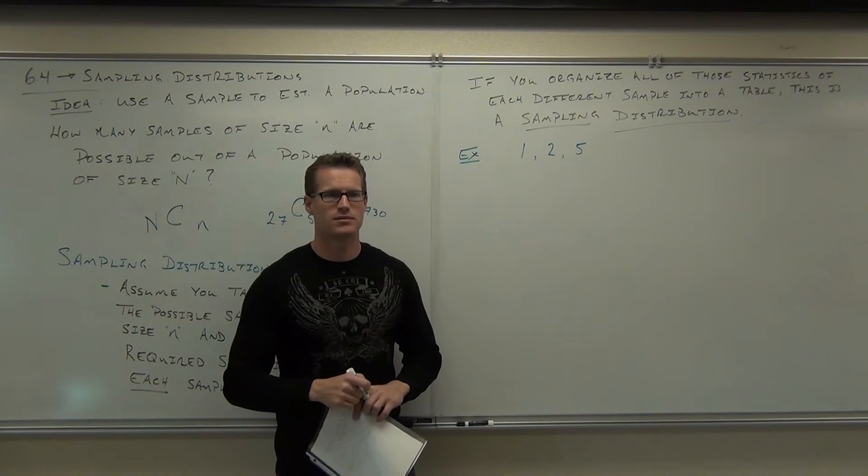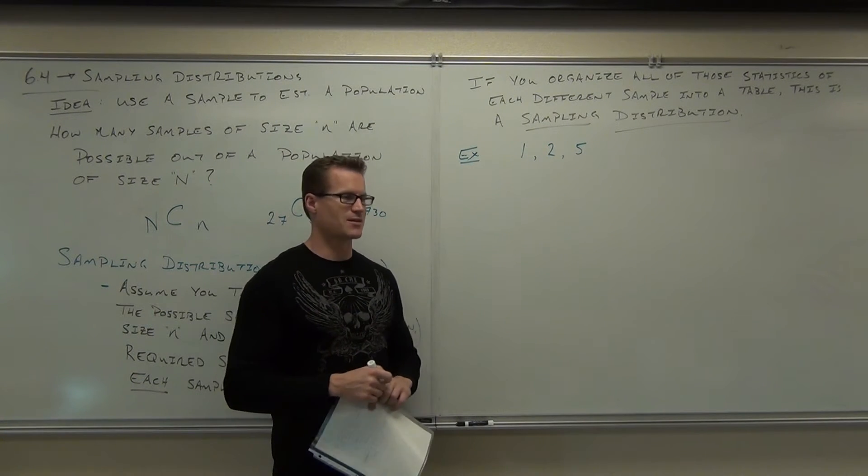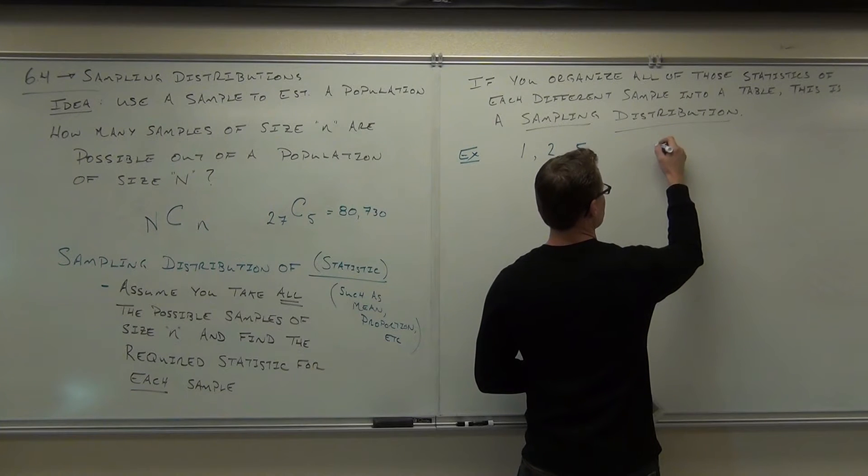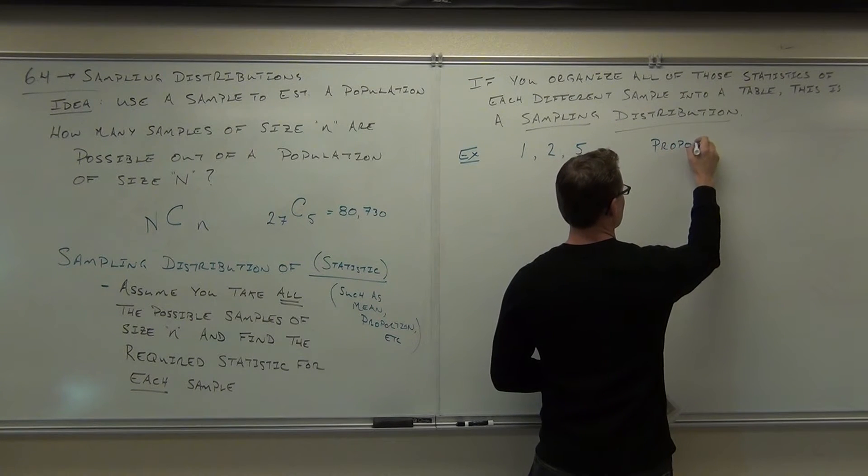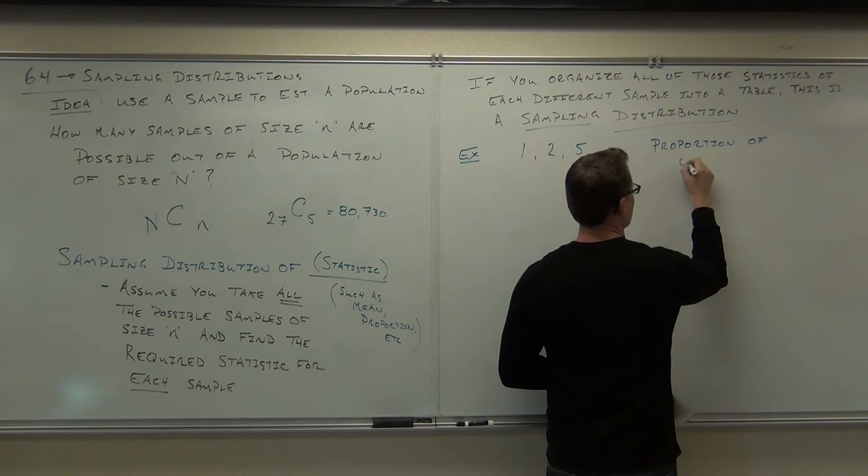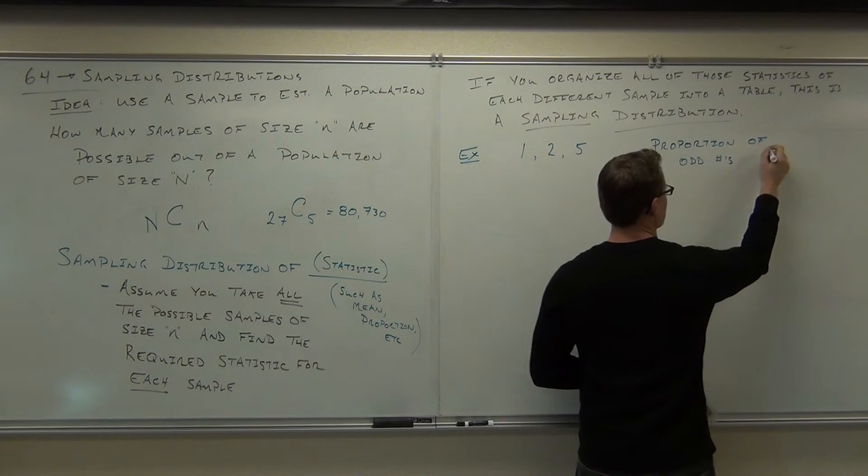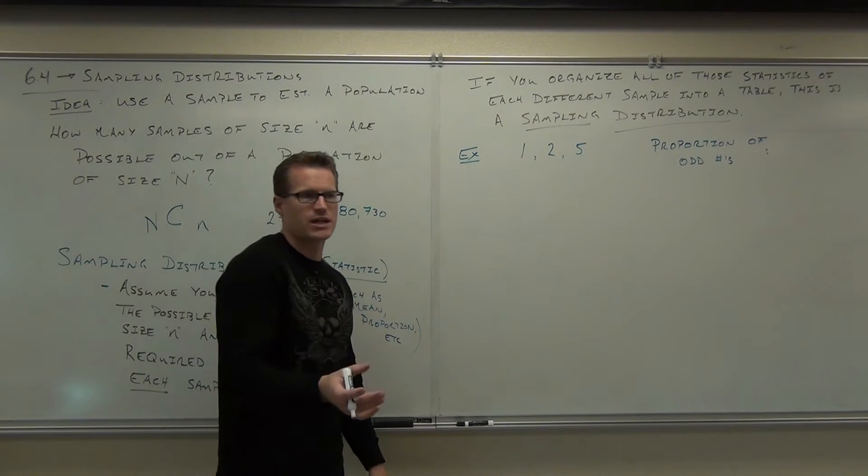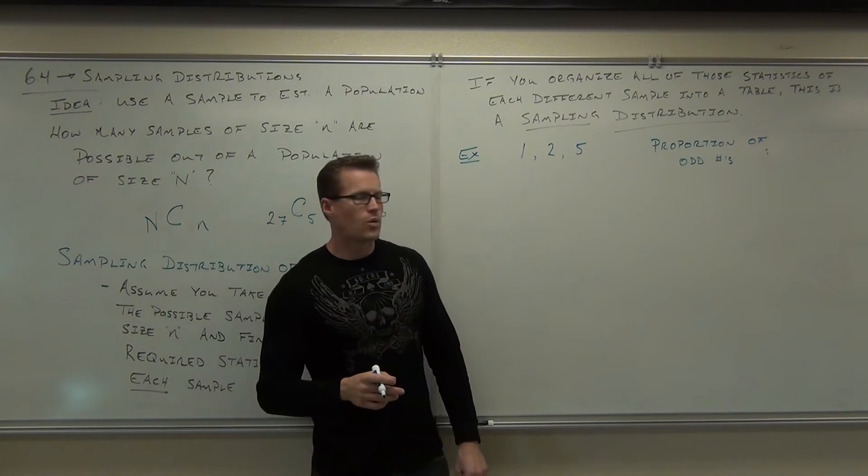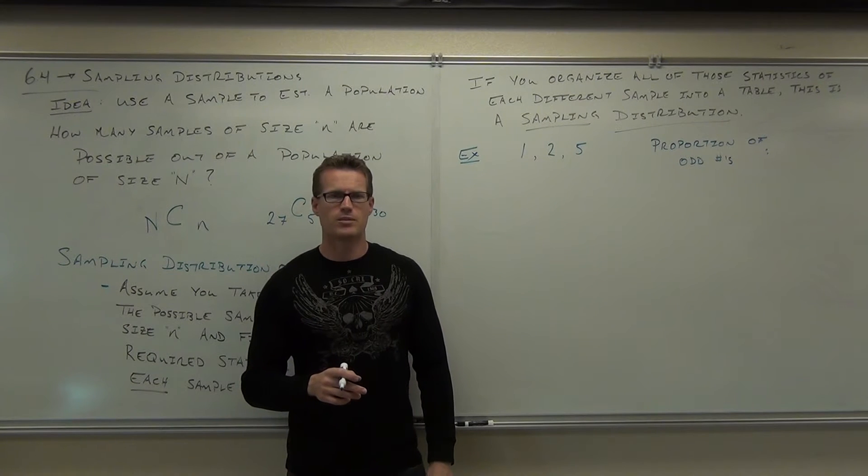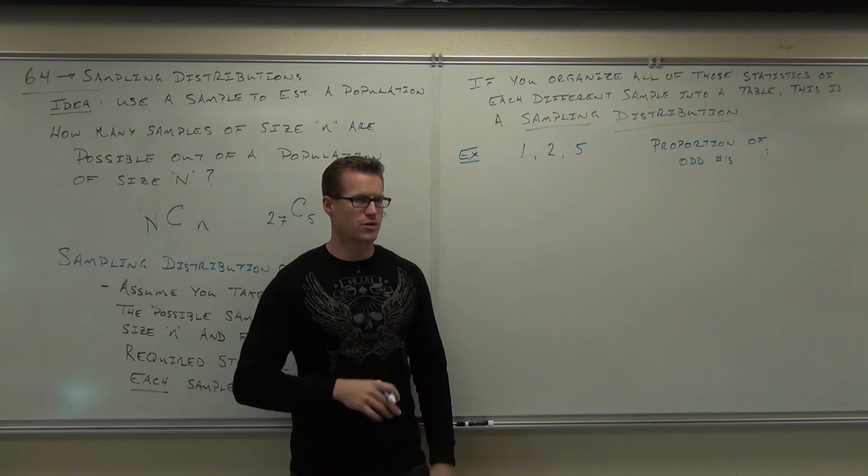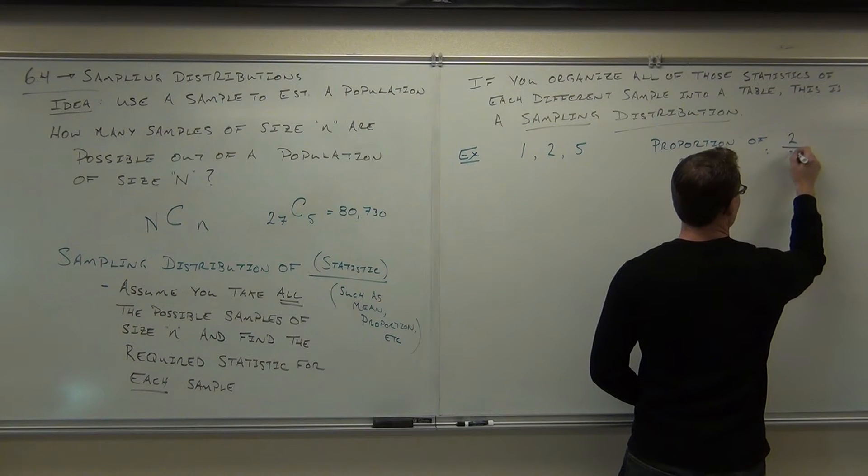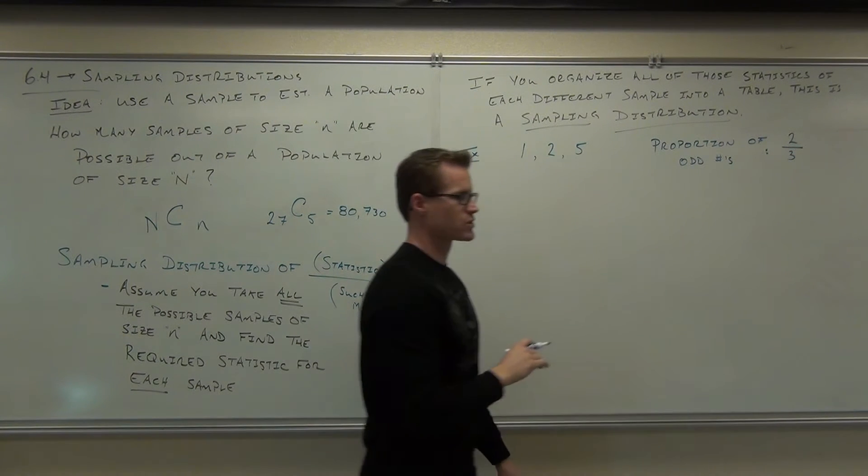How many odd numbers do you have? How many even numbers do you have? We got two odd numbers, we got one even number. Can you tell me what's the proportion of odd numbers? How many odd numbers do we have? Two. Out of how many numbers total? So our proportion is two-thirds. You'd say two-thirds of these numbers are odd. Our proportion is two-thirds.